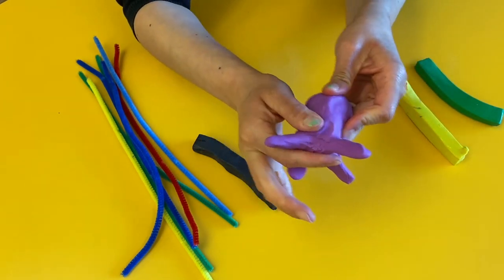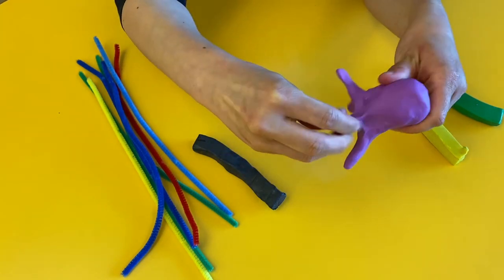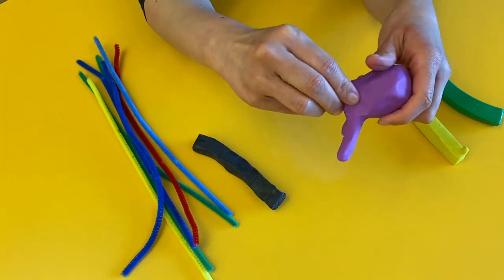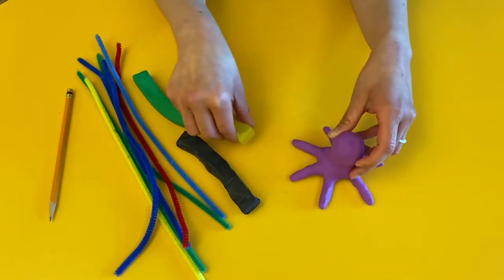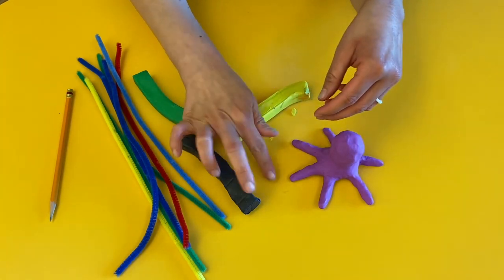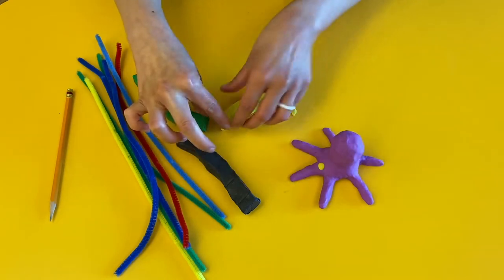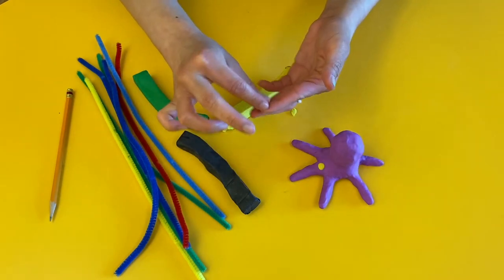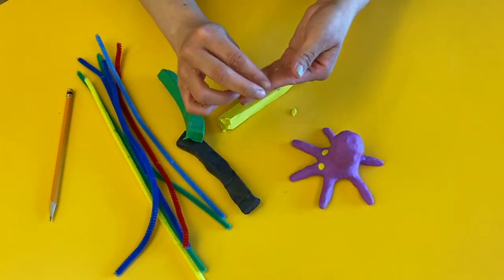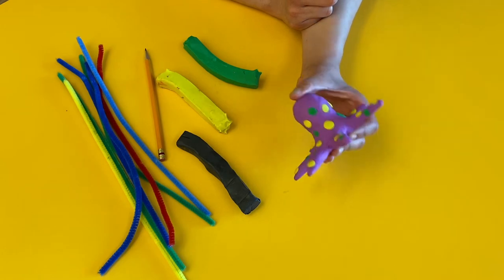And then keep smoothing the top if you just rub it with your finger like this. It gets really smooth. The tentacles are done now so I'm gonna add some details so I can take little pieces of other colors and then roll it and press it on like this and then I'm gonna do that all around with different colors. This is what it looks like with all the details on it.